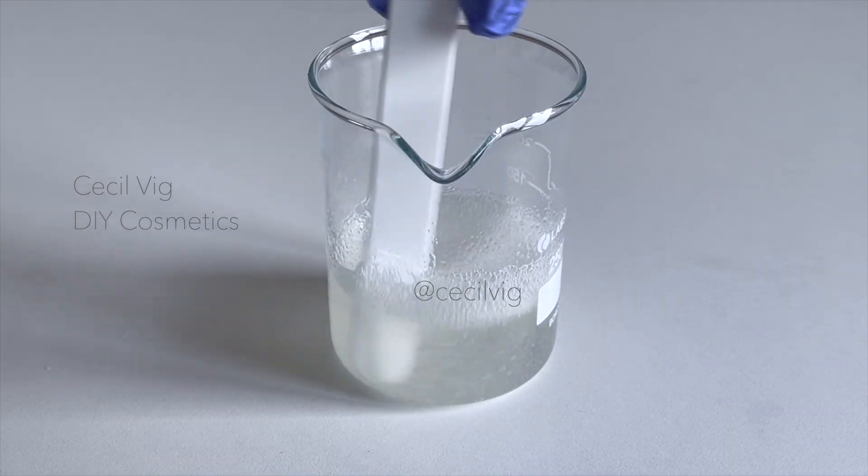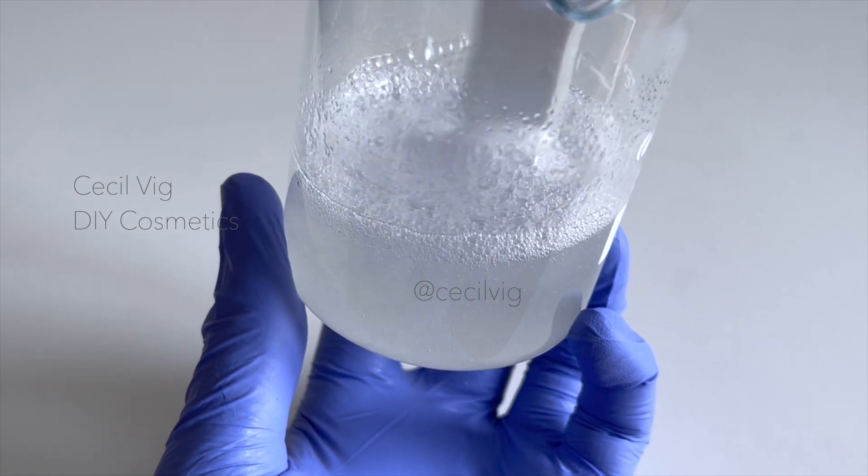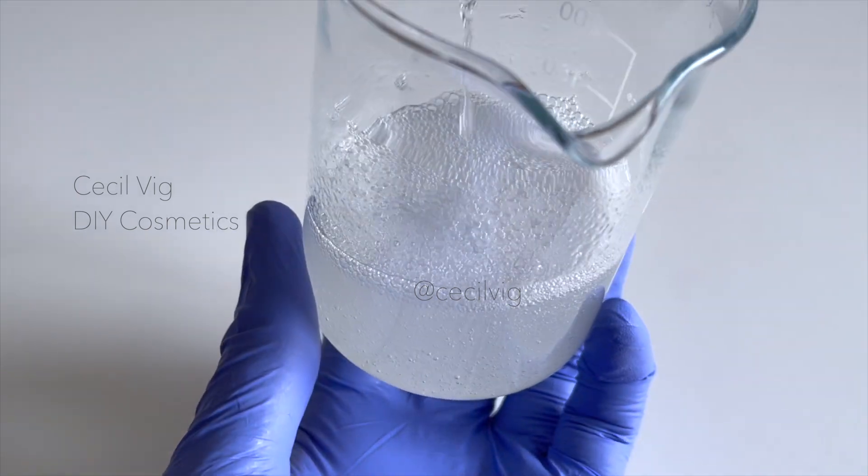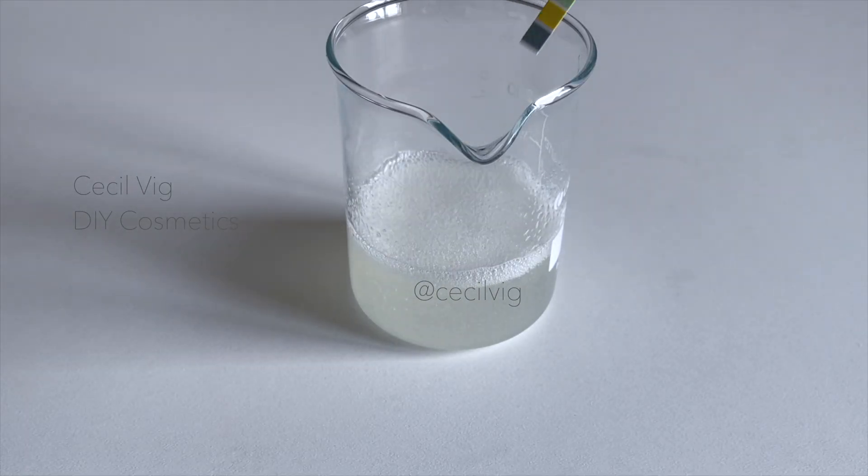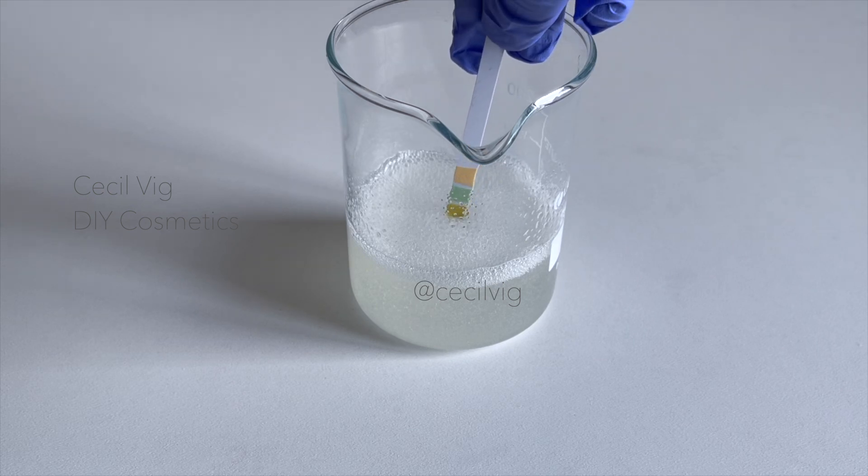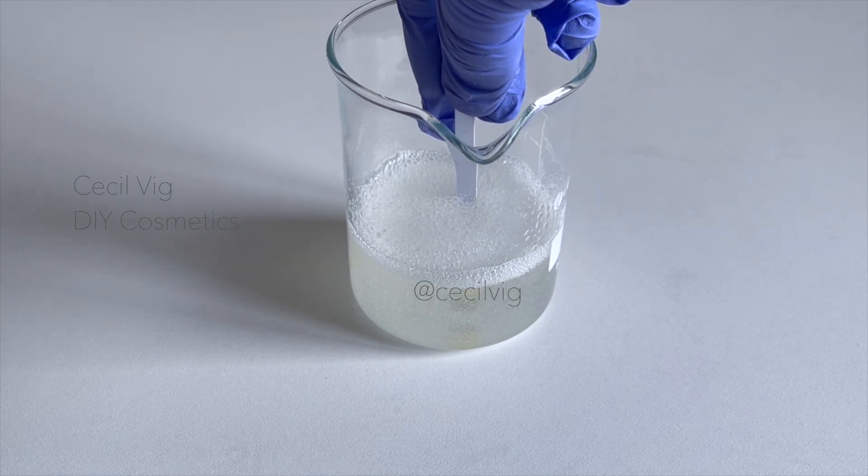After mixing in the xanthan gum I test the pH of the face wash. We need to have a pH of 4. To test the pH I dip my pH strip into the facial cleanser for 10 seconds.